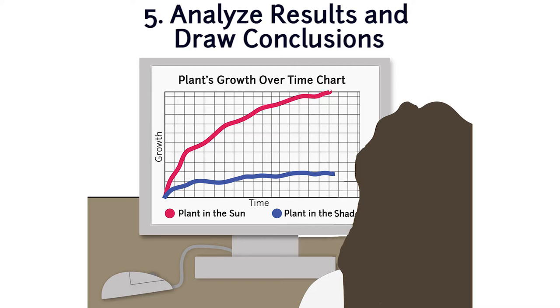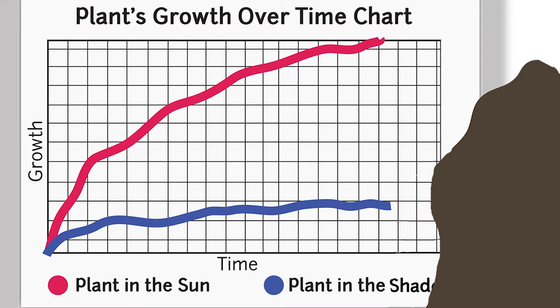After gathering data, scientists analyze the information they collected and then draw conclusions. This is the fifth step of the scientific inquiry process. One good way to analyze data is to make a graph. Was the prediction in the hypothesis correct? If so, why? If not, why not?